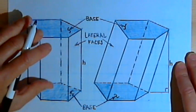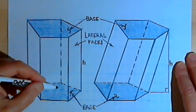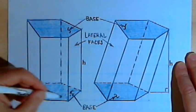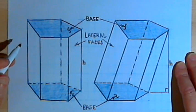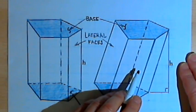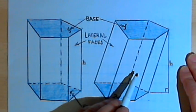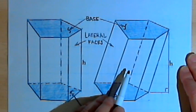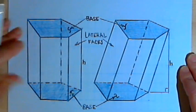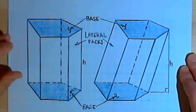The difference is this. For the prism on the left, each of the lateral faces is a rectangle. So when that's the case, you've got what's called a right prism. For this other prism that I have, the faces are not rectangles. If the faces aren't all rectangles, you've got what's called an oblique prism. In this video we're just going to deal with the surface area of right prisms.